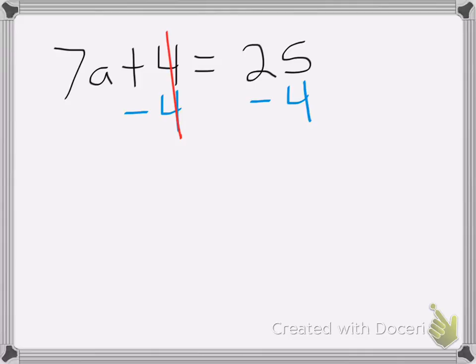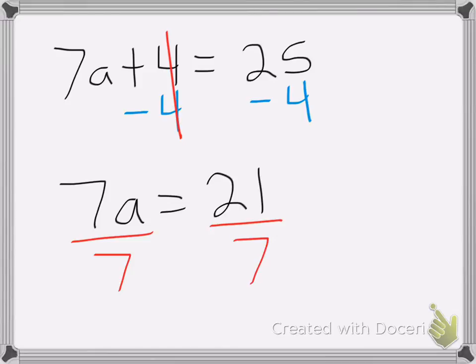And I end up with 7a equals 21, because 25 minus 4 is 21. Now I'm going to divide both sides by 7 to get rid of this 7 here. Those cancel. So a equals 21 divided by 7, which is equal to 3. Okay, and that's all. Good luck on your homework.